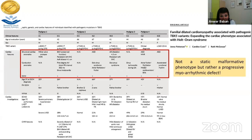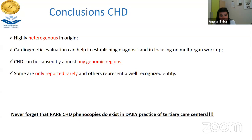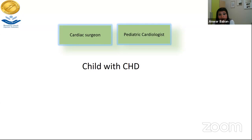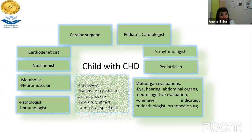In conclusion, congenital heart defects are highly heterogeneous. Cardiogenetic evaluation helps in establishing diagnosis but also in focusing on multi-organ work and multidisciplinary management. CHD can be caused by almost any genomic region and some conditions are reported in very rare ways. We must not forget that rare CHD phenocopies exist even in daily practice. The main branches we see in our cardiogenetics clinic are congenital heart defects, cardiomyopathies, arrhythmias, and aortopathies. Around the child with congenital heart disease we need the pediatric cardiologist, cardiac surgeons, and many others — it is a matter of teamwork.